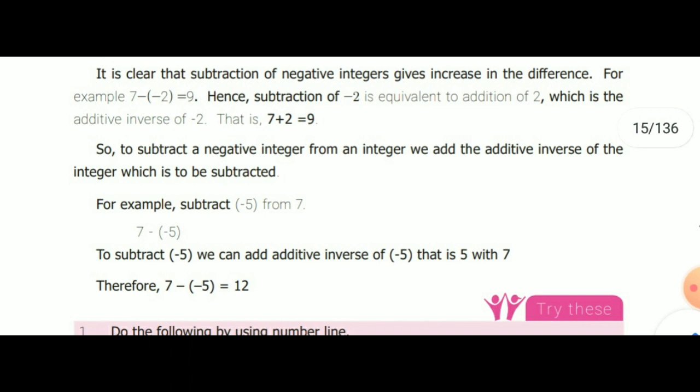When we have subtraction of a minus number — that is, the subtraction sign and the given number are both minus — we have to take the additive inverse. Additive inverse of plus 2 is minus 2; additive inverse of minus 2 is plus 2. So 7 minus (minus 2) can be written as 7 plus the additive inverse of minus 2, which is 7 plus 2 equals 9.